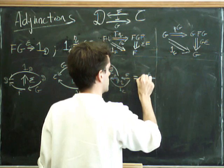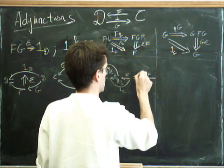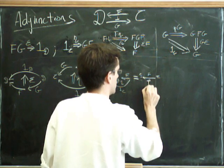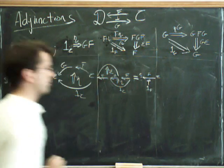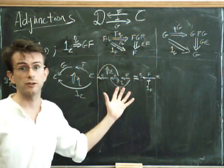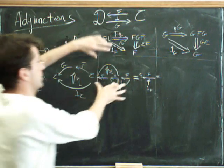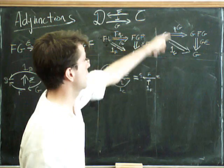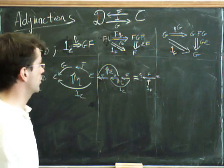So, that's just F. So, this is just supposed to be the, that represents the identity natural transformation on F. So, that's how we translate this into globular things and we have a similar interpretation on the other side.